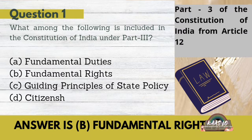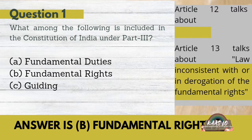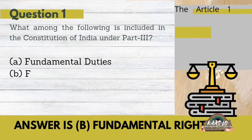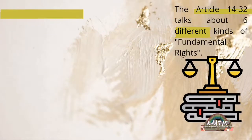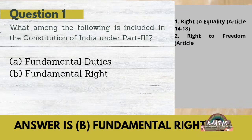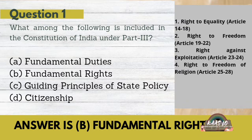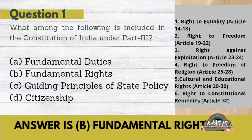Part 3 of the Constitution of India talks about fundamental rights, given under Articles 12 to 35. Article 12 talks about what is 'state', whereas Article 13 talks about laws inconsistent with or in derogation of the fundamental rights. Articles 14 to 32 cover six fundamental rights: Right to Equality (14-18), Right to Freedom (19-22), Right Against Exploitation (23-24), Right to Freedom of Religion (25-28), Cultural and Educational Rights (29-30), and Right to Constitutional Remedies (Article 32).